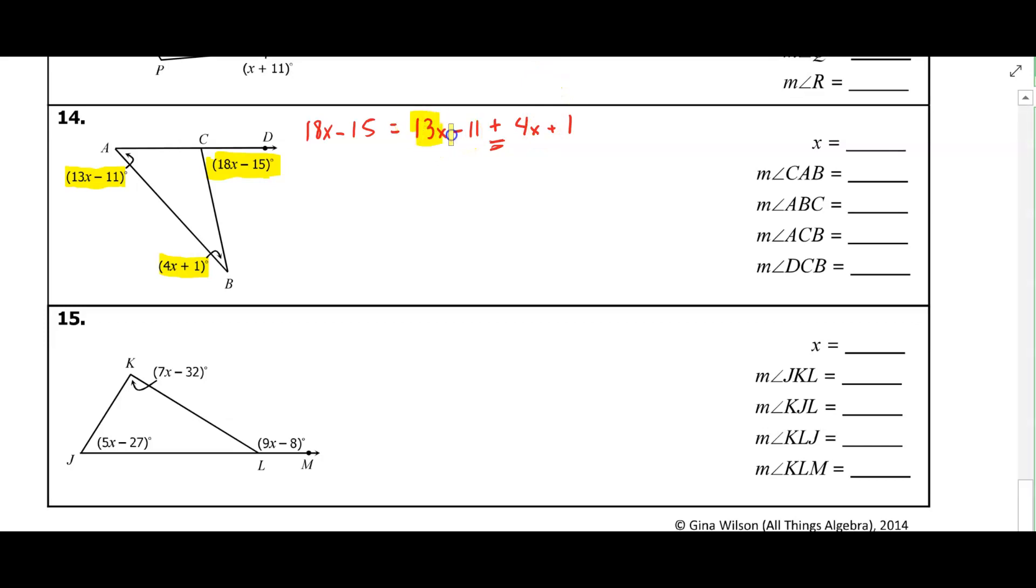Alright, so let's go ahead and combine some like terms on this side. So I have 18X minus 15 is equal to 17X minus 10. Let's subtract 17X from both sides. And I get X minus 15 is equal to negative 10. We'll add 15 to both sides.